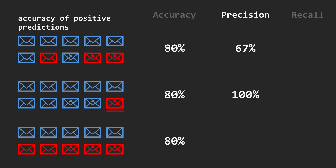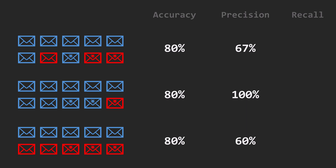And the last model correctly labeled 3 spam emails out of 5 positive predictions, so it works with 60% precision. The third metric, recall, is the ability to find all positive cases, so we look only at spam emails.